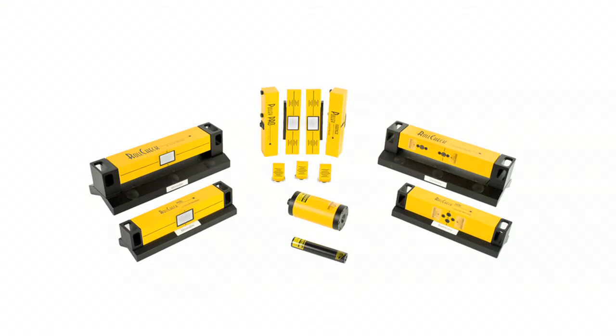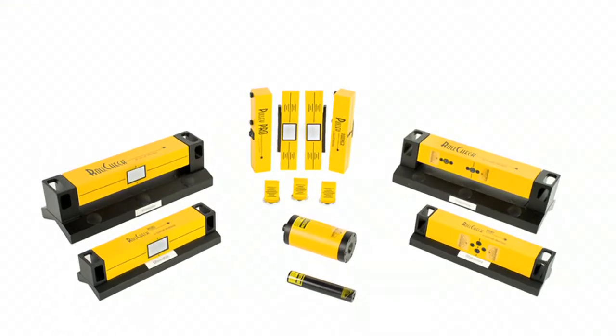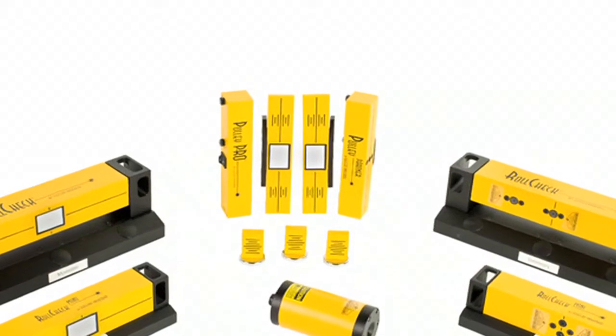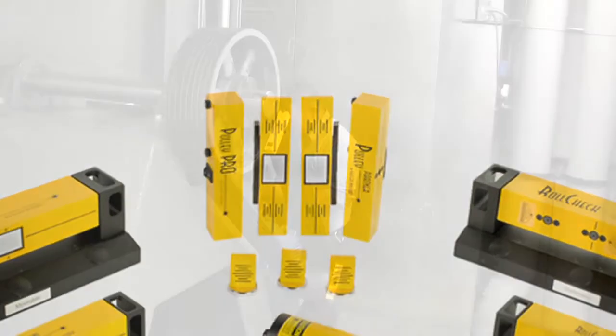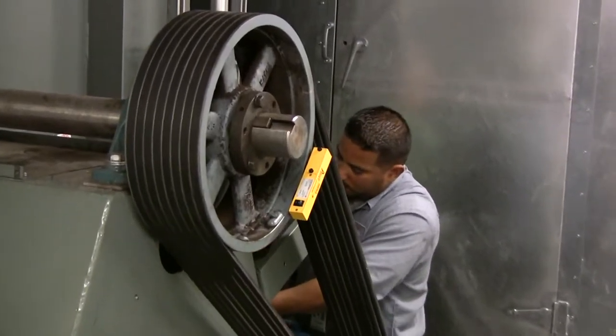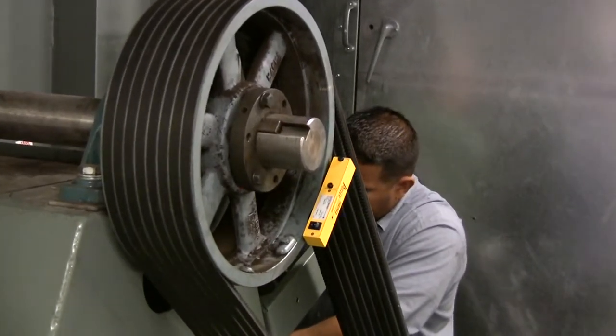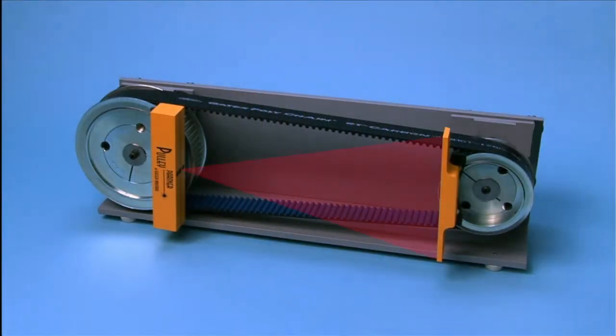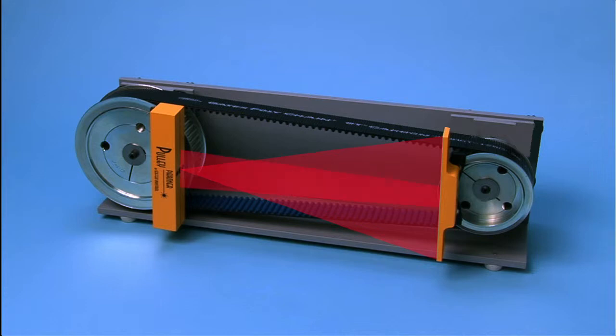These laser systems are specifically designed for the alignment of belt-driven equipment. Our patented and proven reflected laser beam technology significantly helps to reduce drive installation time, manpower, and potential errors. We use a return beam that is twice the angle of incidence, so the reflected beam travels twice the distance, dramatically enhancing accuracy.